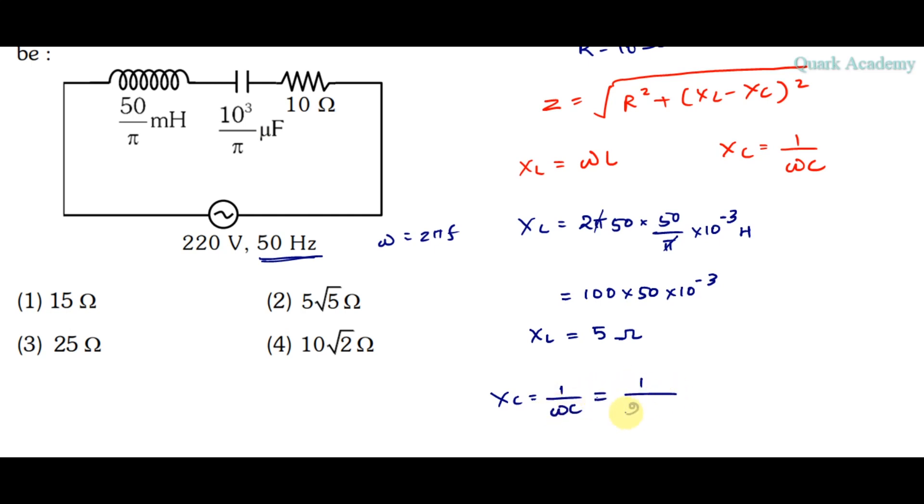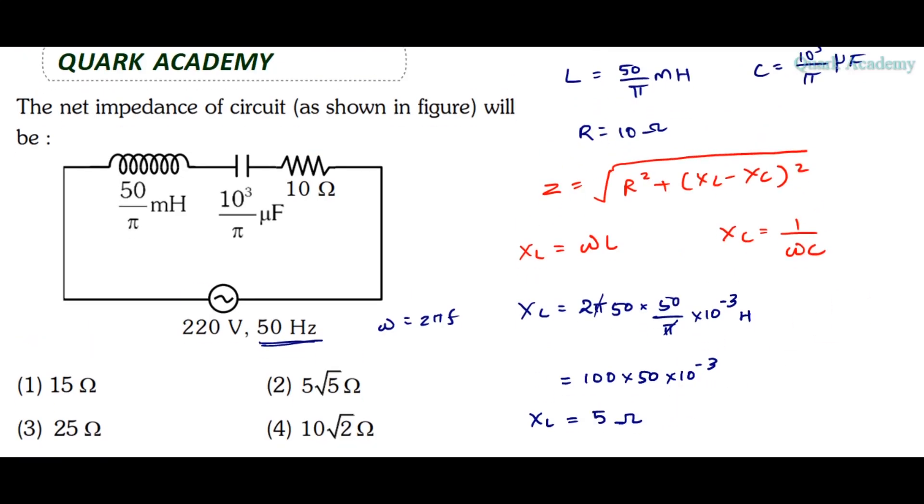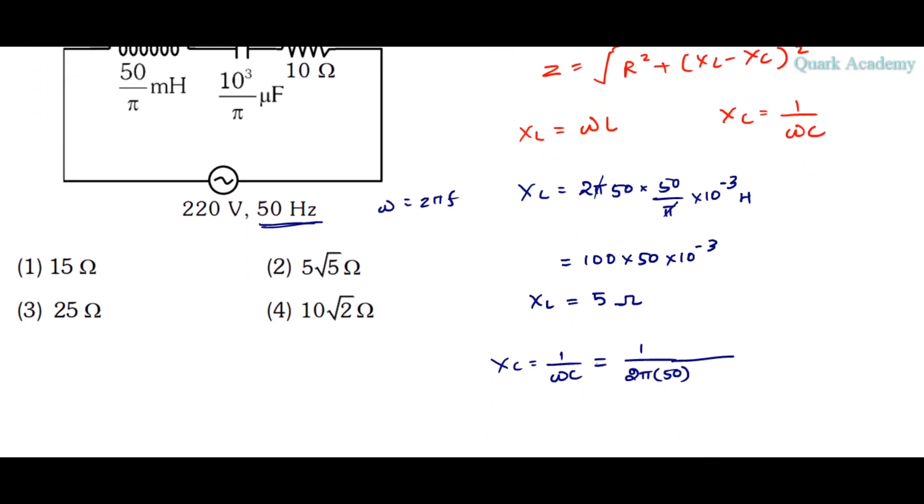So 1 by ωC is 1 over 2πf times C, which is 1 over 2π into 50 times C. The value of C is 10³ by π microfarad, so 10³ by π times 10⁻⁶. This gives us XC equals 10 ohm.